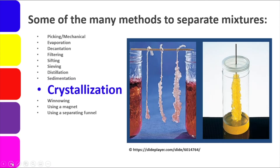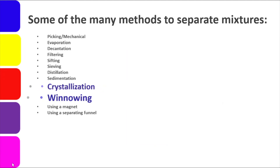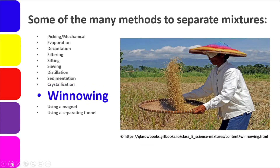Crystallization is similar to sedimentation, but instead of the solid residue settling to the bottom of the container, it attaches to a surface and crystallizes — forming clusters together. Winnowing is basically the use of air — either natural air or blowing air — to carry away the lighter parts while the heavier parts remain. An example is what we see in the fields where the wind carries away the husks or rice bran, leaving behind the heavier rice grains. There is also the newer technique using machinery called a thresher, which works on the same principle.